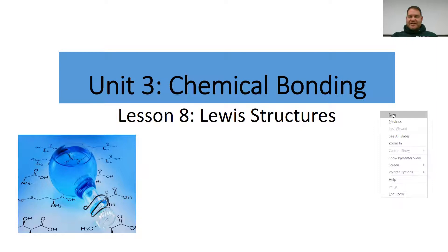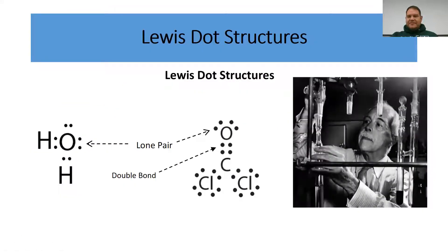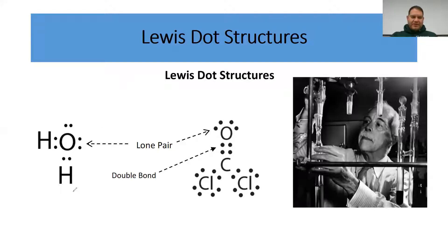Here is a picture of the American scientist Gilbert Lewis. Gilbert Lewis is responsible for designing and developing the idea of Lewis structures, which are therefore named after him. On your screen is a diagram representing two Lewis structures — one for water. Water has the chemical formula H₂O.